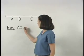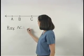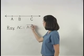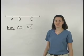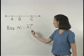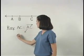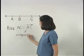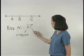Ray AC can be represented using the points A and C with an arrow drawn over them pointing to the right. Note that A is called the endpoint of the ray and C indicates the direction.